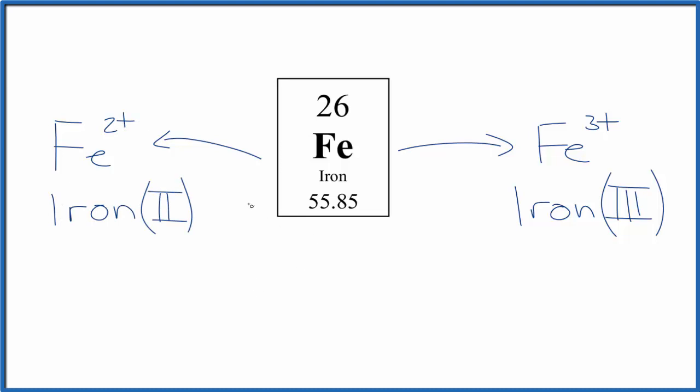So typically iron will form Fe two plus and Fe three plus ions. What that means is when we have this Fe two plus, we lost two electrons. Lose two electrons, they're negative and become positive. Over here, we lost three electrons. And it really depends on the conditions, whether we lose two or we lose three.